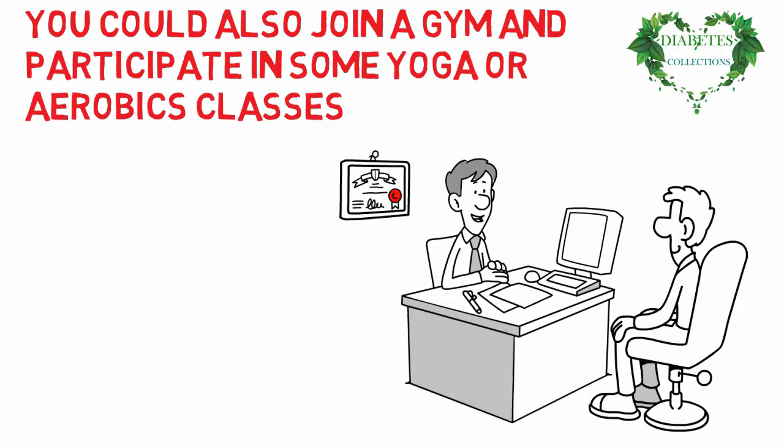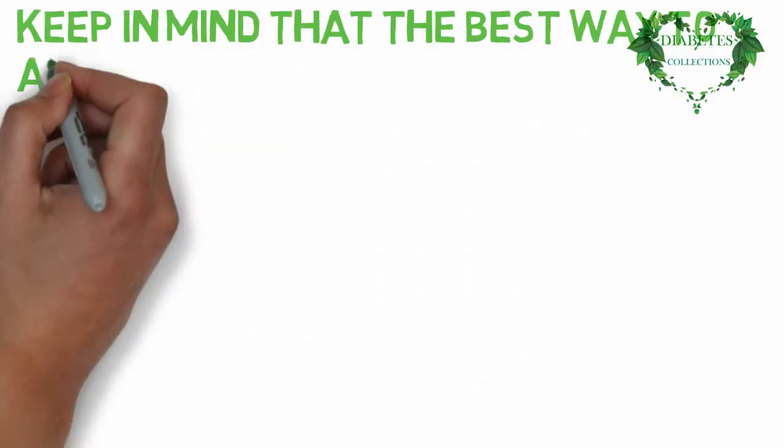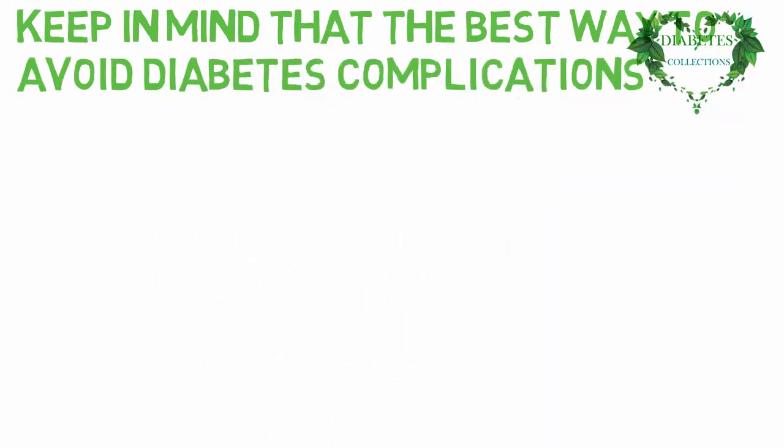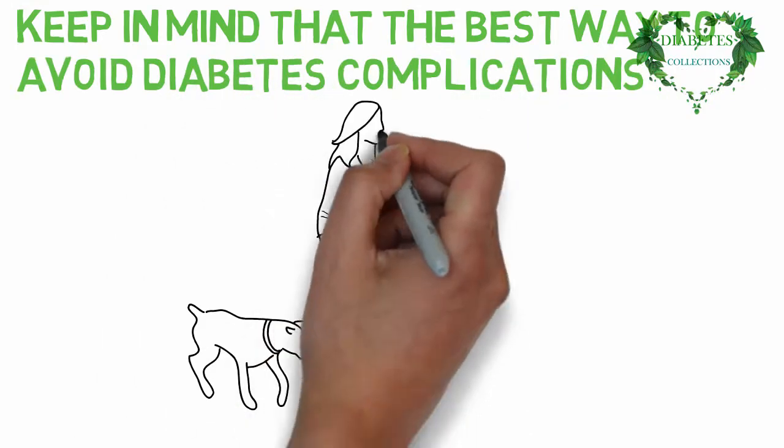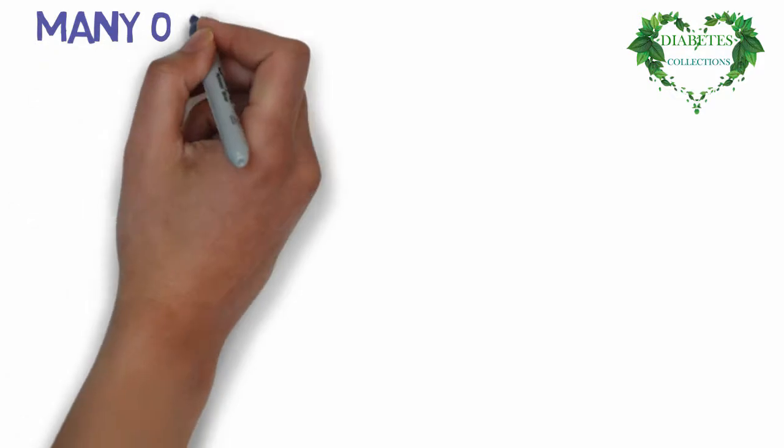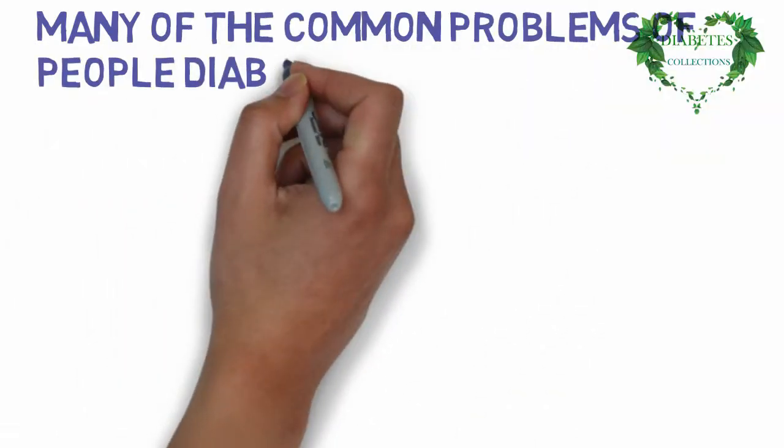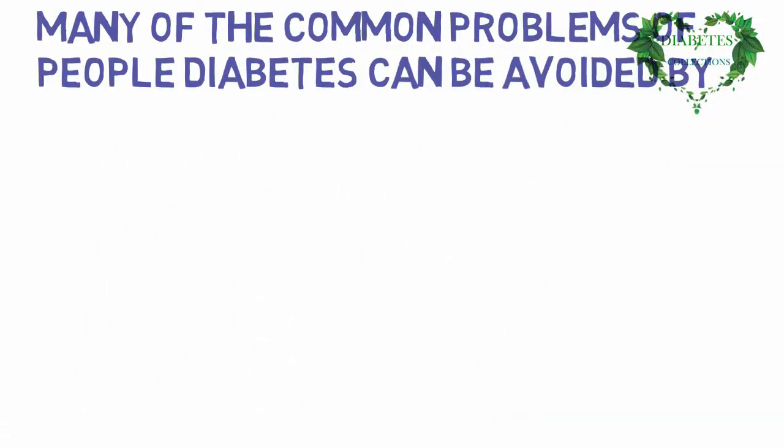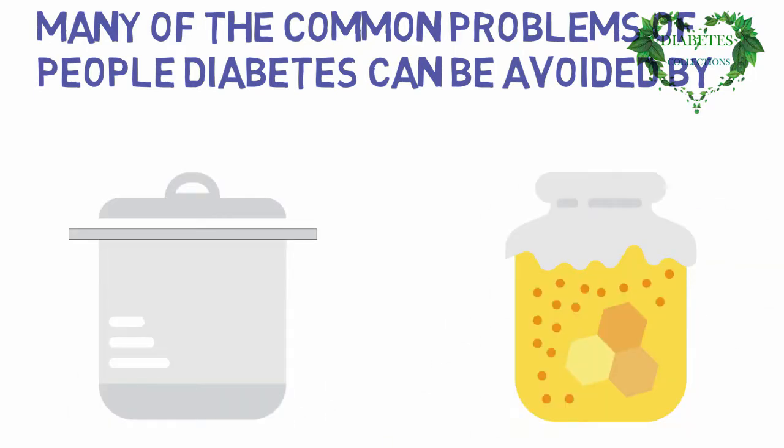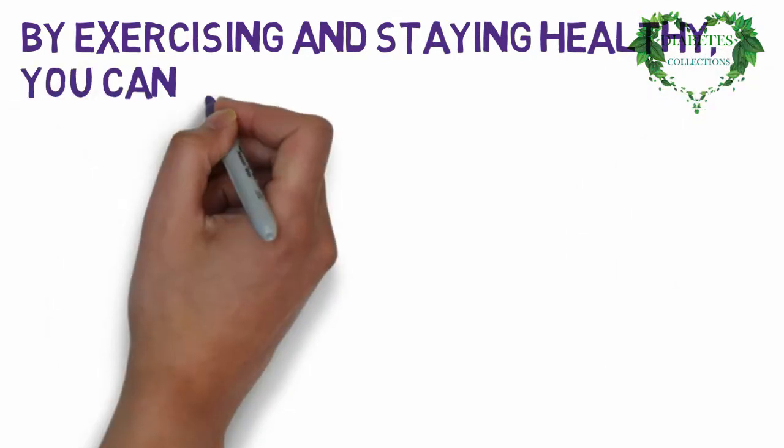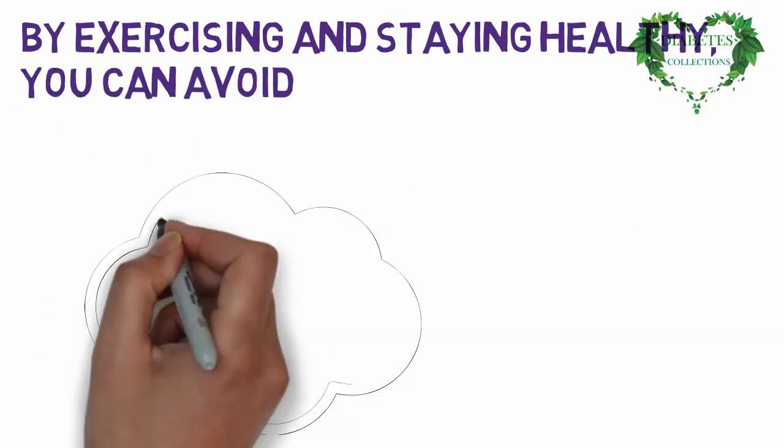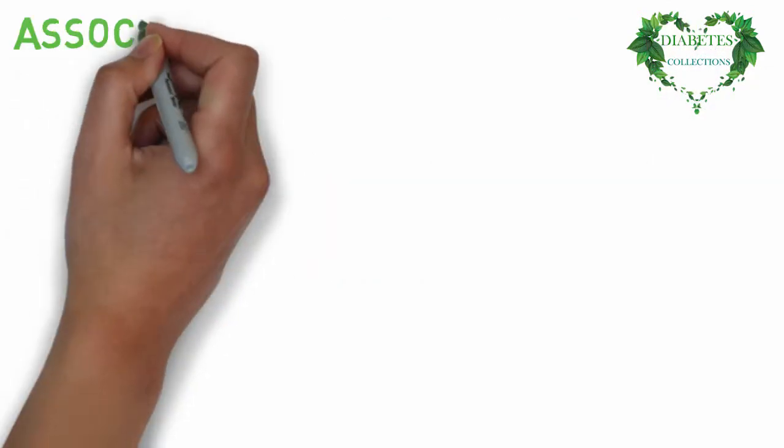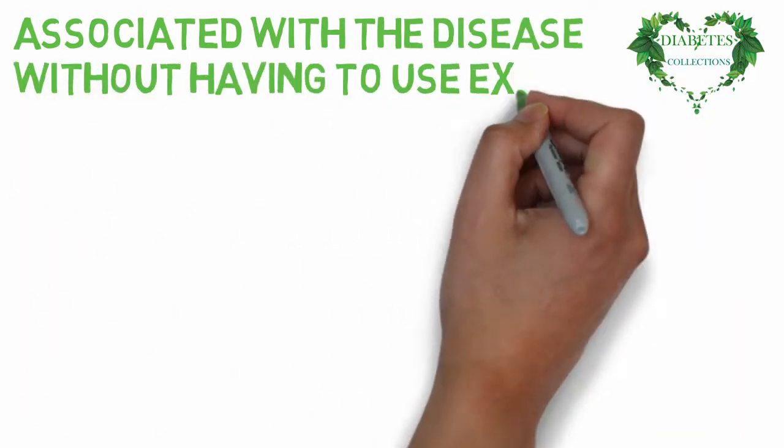Keep in mind that the best way to avoid diabetes complications is to change your lifestyle. Many of the common problems of people with diabetes can be avoided by staying away from sugar and other harmful foods. By exercising and staying healthy, you can avoid vision loss and circulation problems associated with the disease without having to use expensive and debilitating drugs to keep your blood sugar at a healthy level.